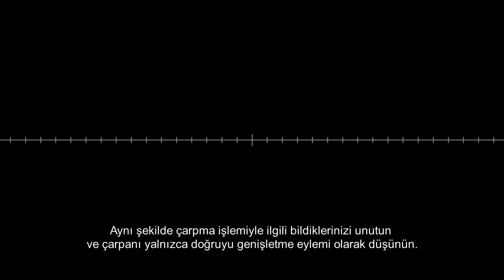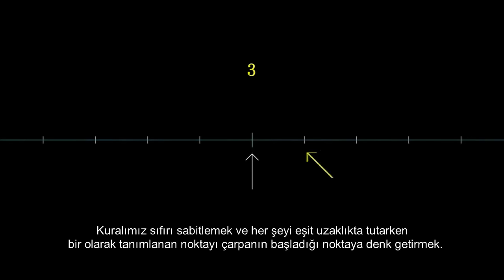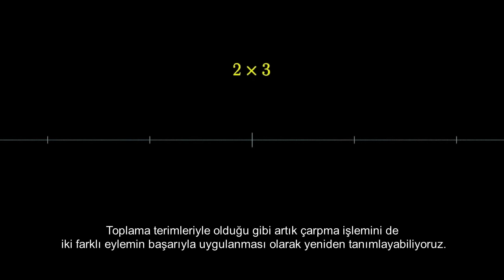Likewise, forget that you already know anything about multiplication, and think of a multiplier purely as a way to stretch the line. The rule is to fix zero in place, and bring the point corresponding with one to where the point corresponding with the multiplier itself started off, keeping everything evenly spaced as you do so. Just as with adders, we can now redefine multiplication as the successive application of two different actions.